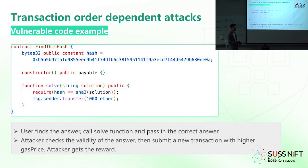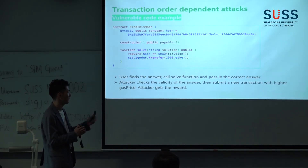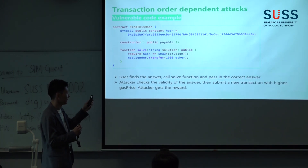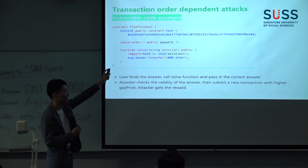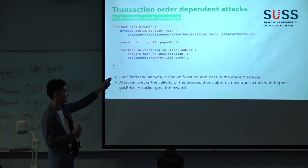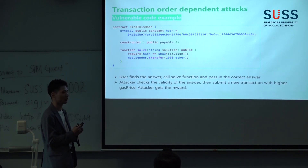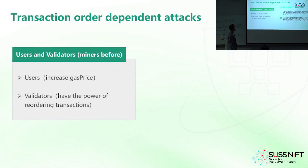The attacker doesn't have the computing power to solve this challenge, but he's smart. He observes the mempool, and then he sees the hard-working user who actually solved this challenge trying to include his transaction in the blockchain. The attacker checks if the answer is correct, and if he knows the answer is correct, he can just submit his own transaction with the solution — because it's all public, it's just a parameter passed to the function — but with a higher gas price, and he will beat the hard-working user and get the reward.